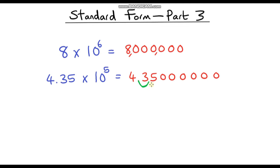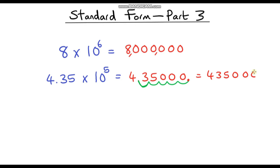Moving the decimal point five places to the right — one, two, three, four, five. The decimal point is now here, and those placeholder zeros aren't doing anything so we can delete them. Our answer is 435,000 — four hundred and thirty-five thousand.